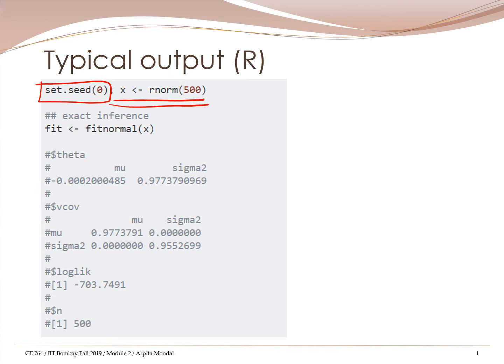We know that X, the random variable, belongs to the normal distribution, and we know that the normal distribution has two parameters, mu and sigma square. By fitting the normal distribution, we are doing nothing but estimating mu and sigma square. The command to do that is fitNormal, and the argument of that function is X.